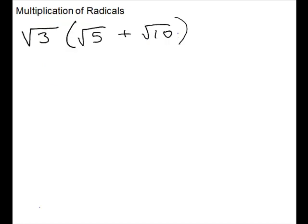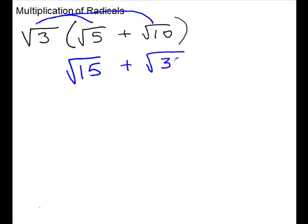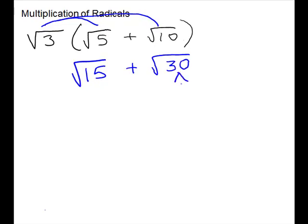Next, we have one radical times a sum of radicals. This is just going to be a distribution problem. We'll multiply that square root of 3 times each of those. For our first one, square root of 3 times 5 — even putting both under the radical, they're not going to simplify. We can't get 2 copies of anything, so it stays as square root of 15. Next, square root of 3 times square root of 10 gives square root of 30. We could try to break 30 down — 3 times 10, and 3 is prime, and 2 times 5 — but it's broken down all the way, so we stop at 30. These two radicals will not combine.